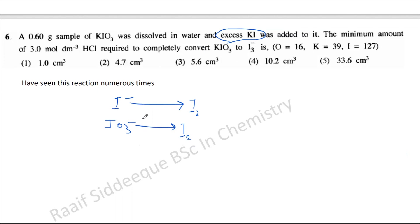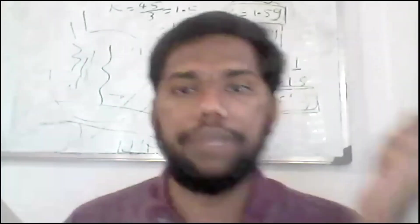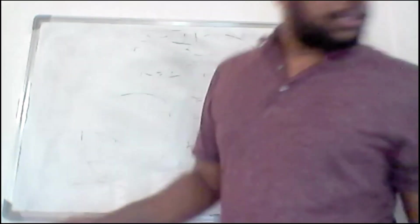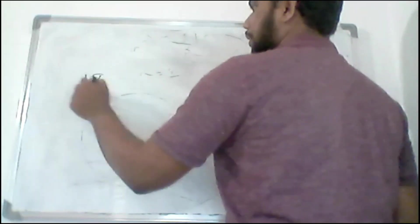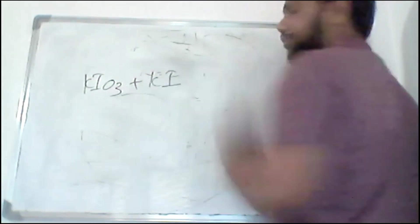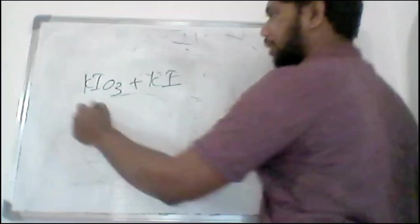Then you need to balance this, and if you balance this one you can automatically see we have to put H+ here in the medium. And then you can calculate the number of moles of KIO3 that you have used here. So we will do the calculation very quickly. So the idea is this. So we have a KIO3 and KI reaction.